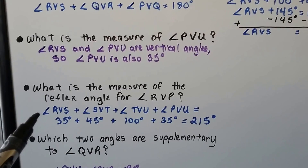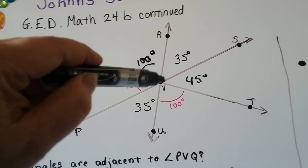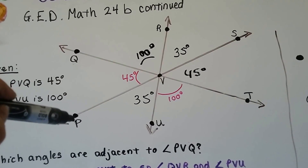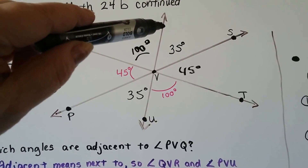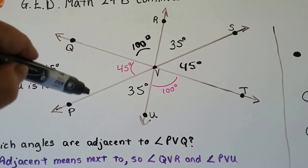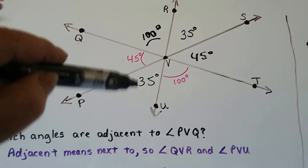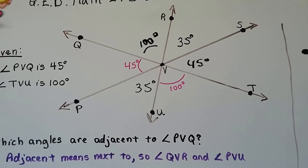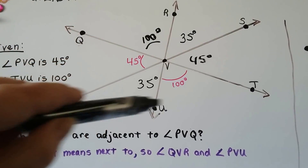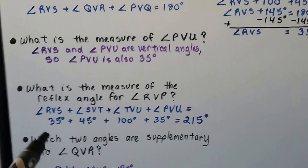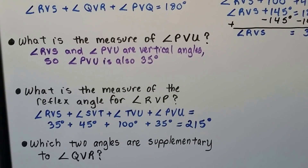What is the measure of the reflex angle for angle RVP? A reflex angle is the one that opened so big it started wrapping around. So we want all of this as one angle — we add this angle, this angle, this angle, and this angle together. Adding the 35, 45, 100, and 35 gives us 215 degrees for that reflex angle.